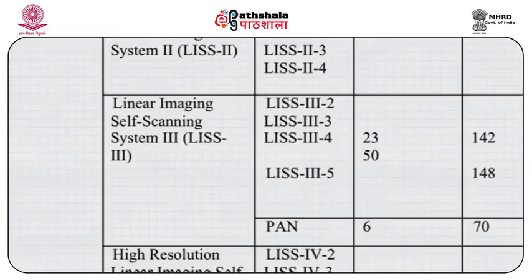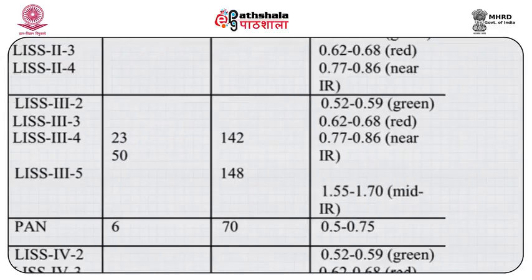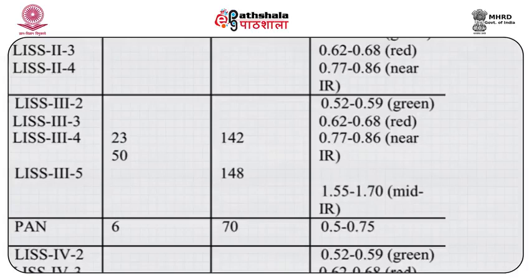Come to LISS 3. LISS 3 has channels LISS 3-2, 3-3, 3-4, and 3-5. The spatial resolution ranges from 23 to 50 meters. Spectral bands range from 0.5–0.59, 0.6–0.68, 0.77–0.86, and 1.55–1.70 mid-IR. The PAN channel has a spatial resolution of 60 meters with spectral range 0.5–0.75.